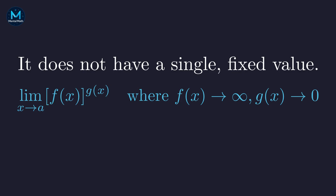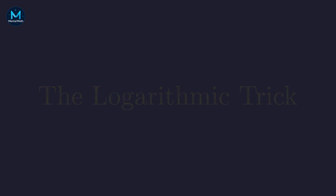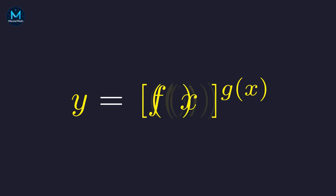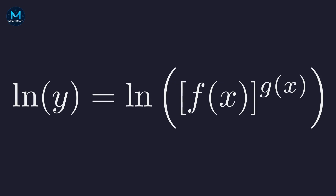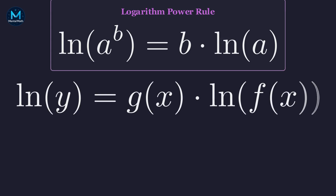We consider a function f(x) that approaches infinity, raised to the power of another function g(x) that approaches zero. The standard technique here is an elegant algebraic move I like to call the logarithmic trick. Setting a variable y equal to our expression, the goal is to bring the exponent g(x) down. Taking the natural logarithm of both sides will do exactly that. Using the logarithm power rule — the log of something raised to a power equals the power times the log of that something — we bring the exponent g(x) down to the front as a multiplier.